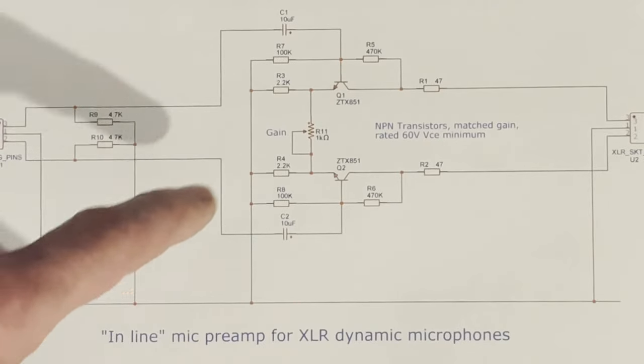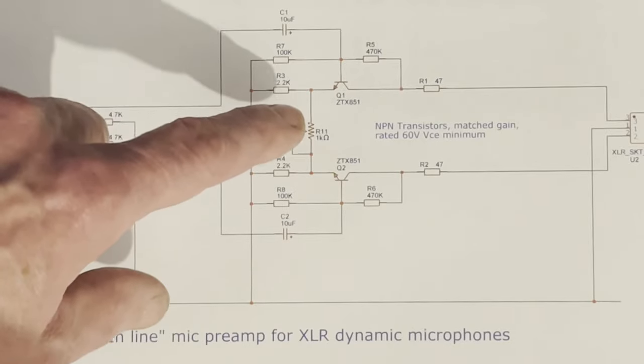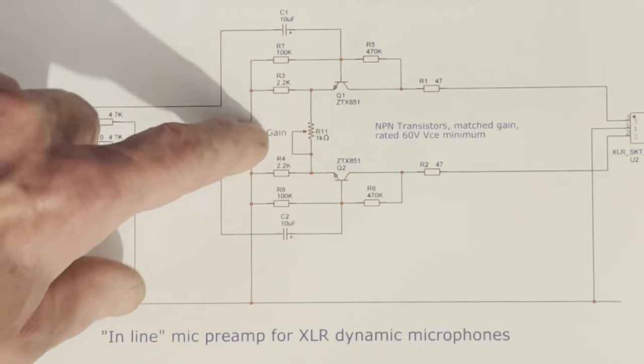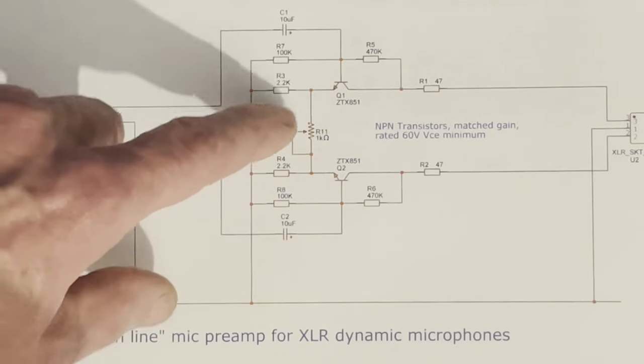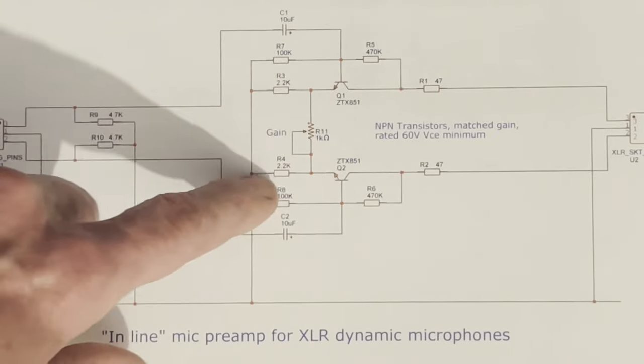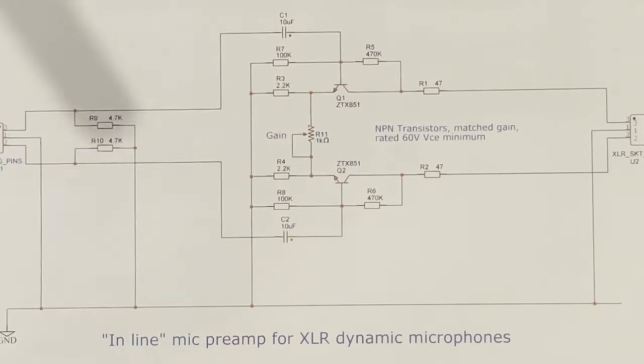So yes, the main mod from the original circuit which had completely separate emitter resistors is this now has a preset across linking them which is on the back of this board, 1k preset.